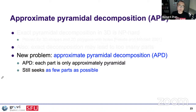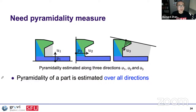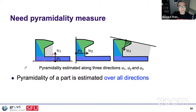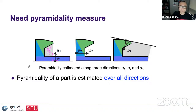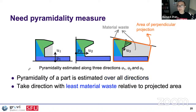We turned to an approximate version: APD (Approximate Pyramidal Decomposition), where each part only needs to be approximately pyramidal. We can reduce waste material without completely eliminating it, aiming for as few parts as possible. This requires a pyramidality measure, which is easy to define: given a base and an up direction, we measure the estimated support waste by perpendicular projection — whatever is not part of the shape is support waste. Pyramidality is estimated over all directions, and we take the direction with least material waste relative to projected area as the pyramidality measure.